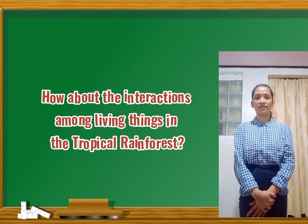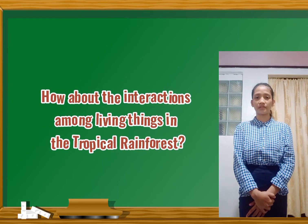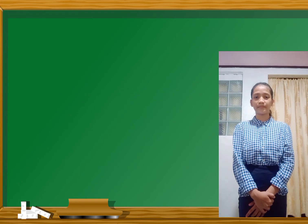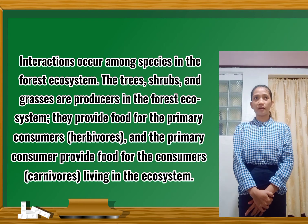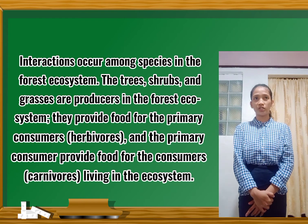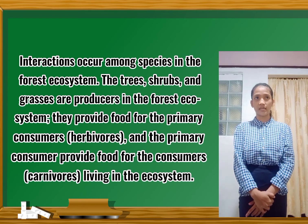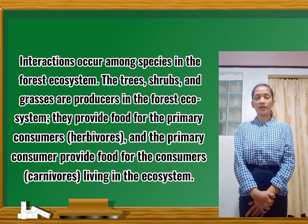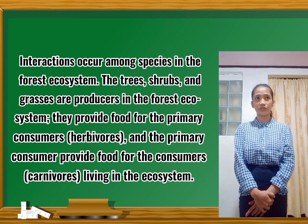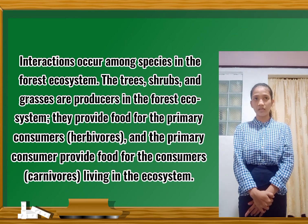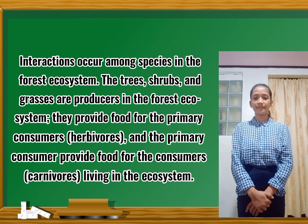How about the interactions among living things in tropical rainforests? Interactions occur among species in the forest ecosystem. The trees, shrubs, and grasses are producers in the forest ecosystem. They provide food for the primary consumers or herbivores and the secondary consumers or carnivores living in the ecosystem.